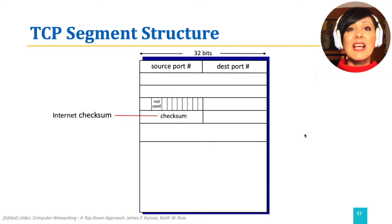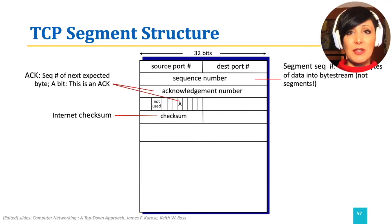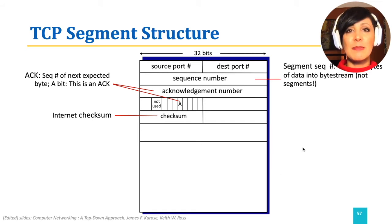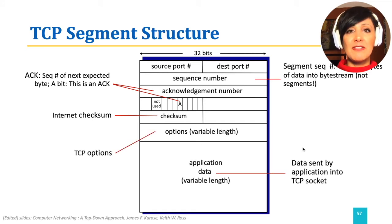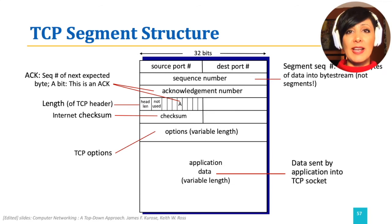The TCP header also has sequence number and acknowledgement number fields, as well as a control bit ACK showing if the current segment's acknowledgement number value is valid. Additional TCP options that could be of variable length are at the end of the header and right before the data payload. Therefore, the header length is variable, and there is a need for a field to determine it.